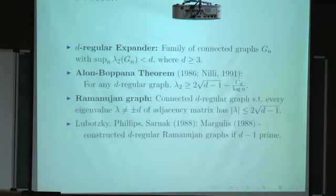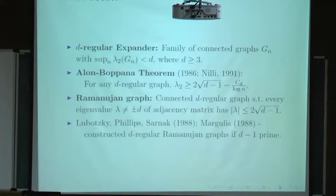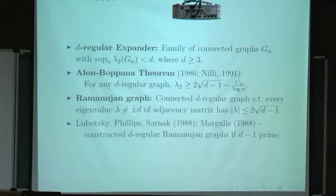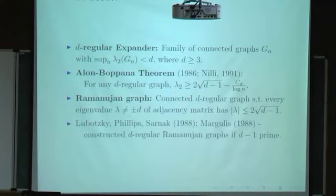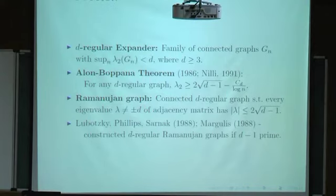The larger the gap between lambda 2 and D, the better the expansion. The Alon-Boppana theorem tells you how good the expansion can be: lambda 2 is at least twice root D minus 1, minus a correction which goes to zero as the graph grows. Motivated by this, Lubotzky-Phillips-Sarnak defined a graph to be Ramanujan if it's a connected D-regular graph where all eigenvalues except the extremal ones, plus or minus D, have absolute value less than 2 root D minus 1.